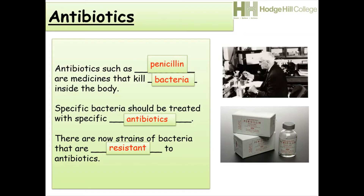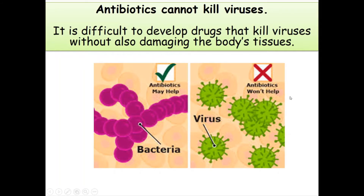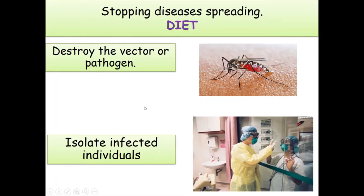Things like superbugs are very difficult to treat. An important thing to know about antibiotics is that they cannot kill viruses — they are only effective against bacteria. It is difficult to develop drugs that kill viruses without also damaging the body's tissues. To stop diseases from spreading, we use the acronym DIET.